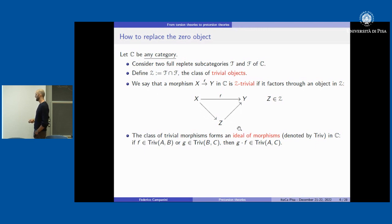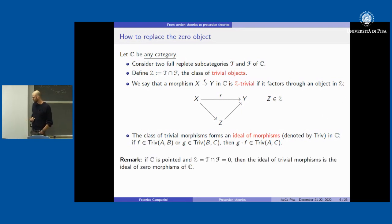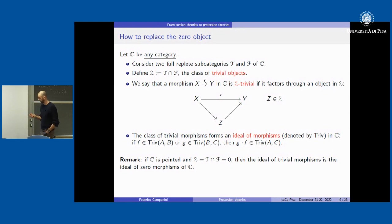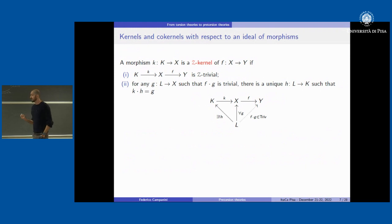The class of trivial morphisms is actually an ideal of morphisms in C, denoted by Z, where ideal means that if we have a composition and one of the two morphisms is in the ideal, then the composition is in the ideal. Of course, if Z is just the zero object in a pointed category, this ideal is the ideal of zero morphisms.